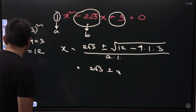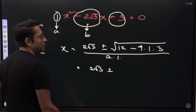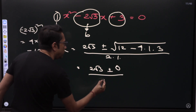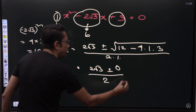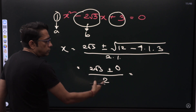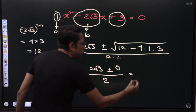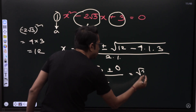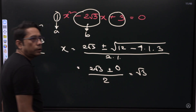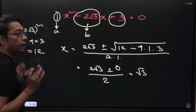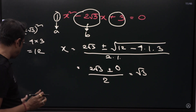12 minus 12 is zero! That means zero divided by 2. So this is simply 2 root 3 by 2, which equals root 3. That's the answer. This is how we apply the quadratic formula.